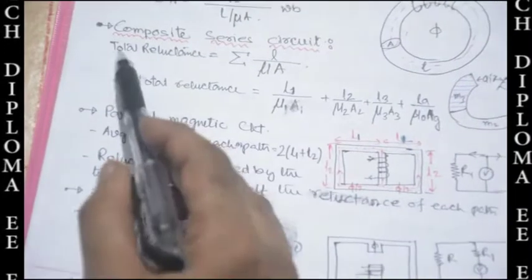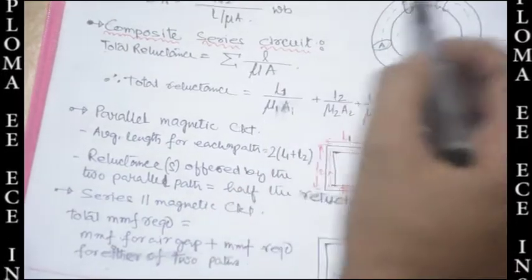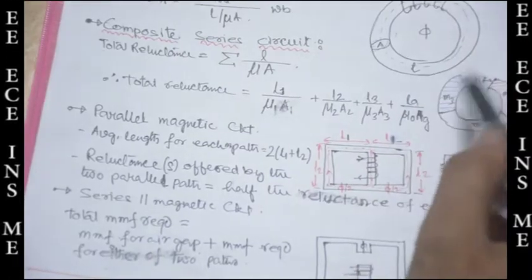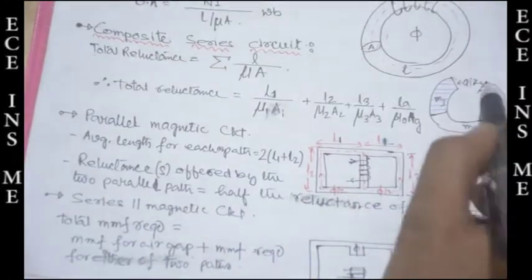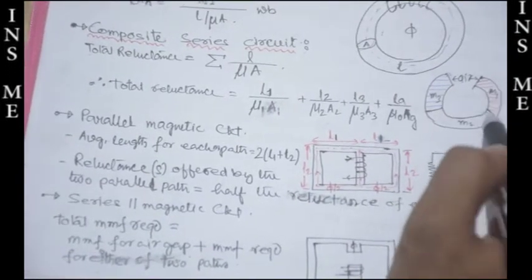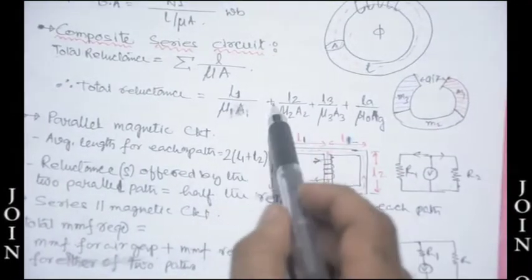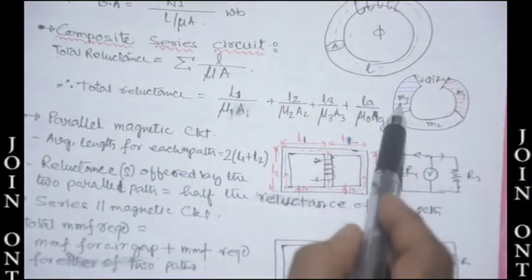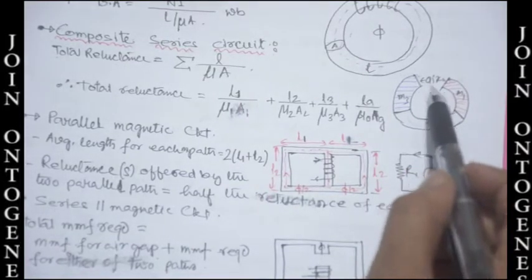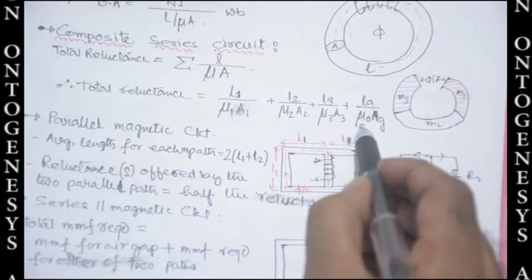Composite series circuit: total reluctance is given by the sum L₁/(μ₁A₁) + L₂/(μ₂A₂) + L₃/(μ₃A₃). If the core uses different magnetic materials of different permeability, the reluctances add up. If there is an air gap, its reluctance term is L_g / (μ₀ · A_g), where μ₀ is the absolute permeability of air and vacuum.